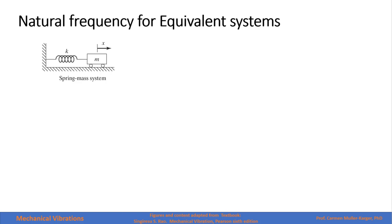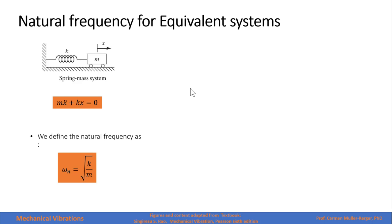Let's talk about natural frequency for equivalent systems. For the simplest system, which is a spring-mass system, we know that the governing equation is a second-order differential equation: mass times acceleration plus the spring constant times displacement equals zero. We define the natural frequency as the square root of the coefficient that goes with the displacement divided by the coefficient that goes with the acceleration, which is the mass.